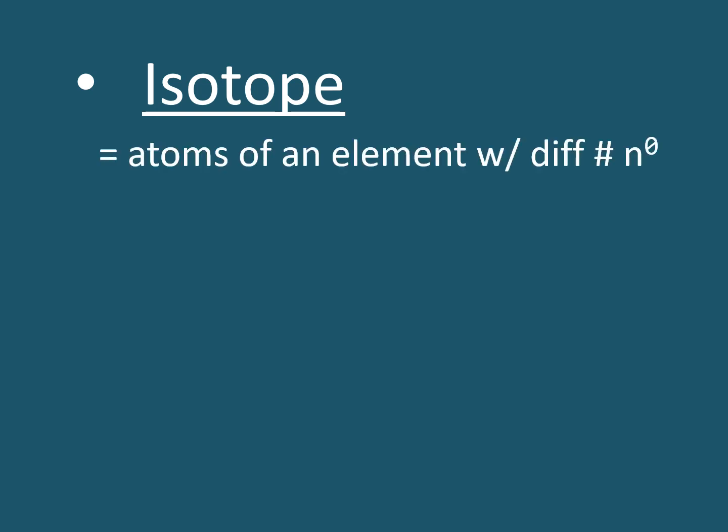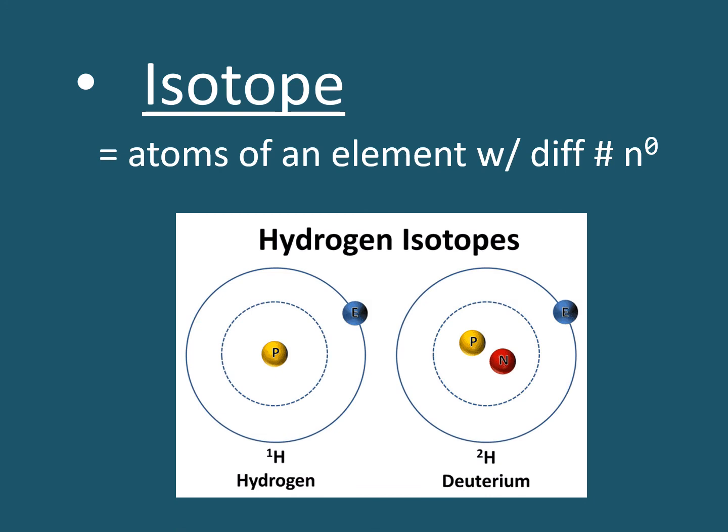Isotopes are atoms of an element with different numbers of neutrons. Here we have two different isotopes of hydrogen. On the left, there's a hydrogen atom that has one proton and one electron. This is known as hydrogen one. This is the normal, most commonly found, hydrogen in the universe. To the right, we have a hydrogen atom with one proton and one neutron in the nucleus. This is known as hydrogen two or deuterium. Notice that the mass number of deuterium is two.